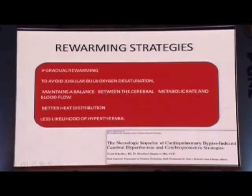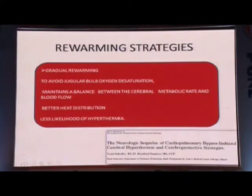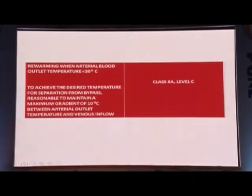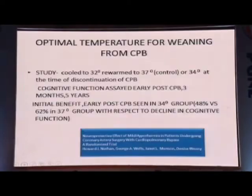Gradual re-warming is recommended. To avoid jugular bulb oxygen desaturation, maintain a balance between cerebral metabolic rate and cerebral blood flow, because during re-warming, cerebral autoregulation may also be affected. Re-warming rate: generally not more than 0.5 degrees centigrade per minute — Class 2, Level B recommendation. Always maintain a gradient less than 4 degrees. Re-warming when arterial blood outlet temperature is less than 30 degrees to achieve the desired temperature for separation from bypass. Reasonable to maintain a maximum gradient of 10 degrees between arterial and venous outlets — Class 2A, Level C.